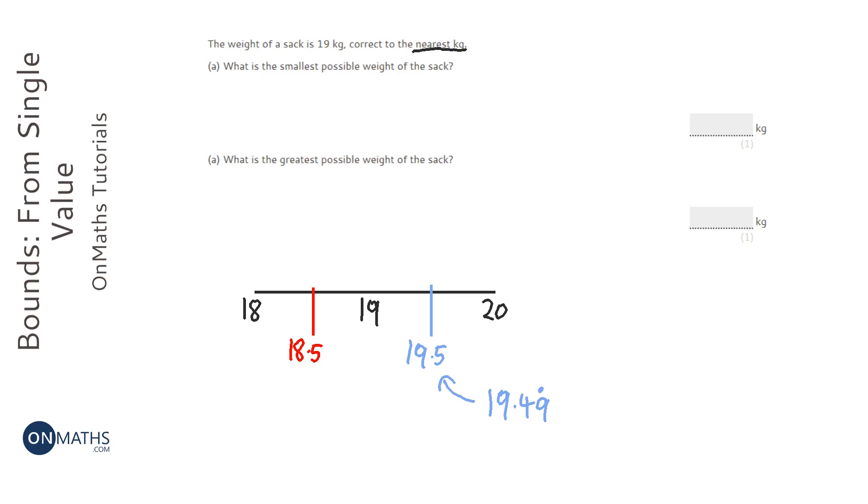So for our smallest possible weight, we put 18.5, and for the maximum possible weight, we can actually put 19.5, even though we know that would have rounded to 20.